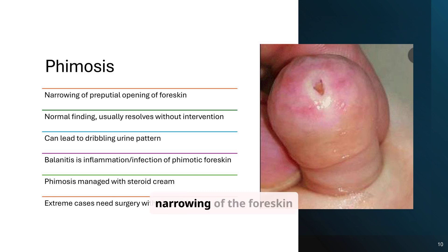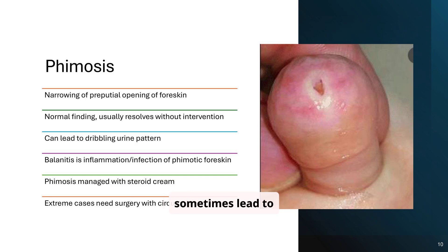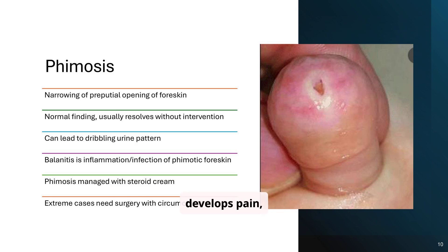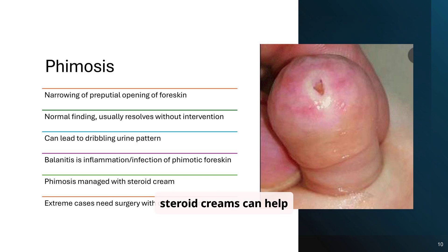Phimosis — the narrowing of the foreskin opening — is often a normal finding that resolves on its own. However, it can sometimes lead to complications like balanitis. Steroid creams can be helpful, but severe cases may require circumcision. This is normal in babies and usually resolves with time. But if a child develops pain, ballooning during urination, or infections, now it's a problem. Topical steroid creams can help loosen things up. Circumcision is a last resort, not a first response.